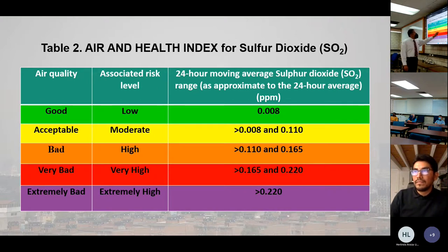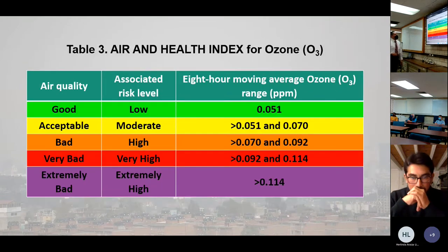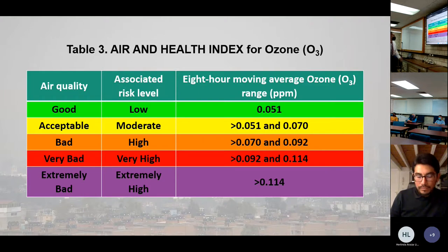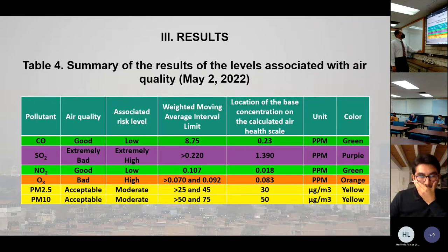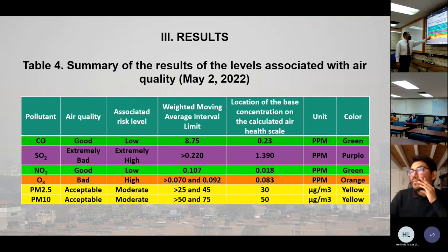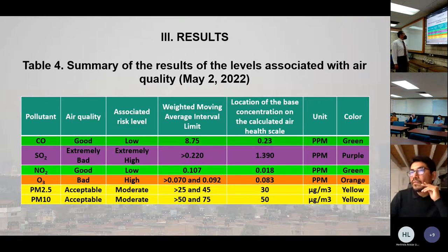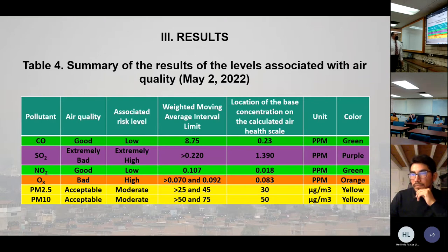The air and health index for sulfur dioxide and fine particles has levels ranging from acceptable to extremely bad, with corresponding risk levels from low to extremely high. A summary table shows that on the contingency days, air quality was classified as bad — high risk — and sulfur dioxide was extremely bad at extremely high risk, which is why local authorities declared the environmental contingency.